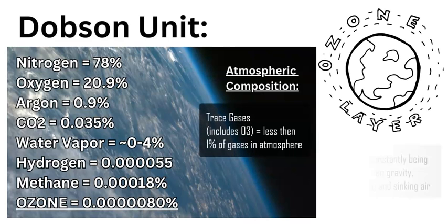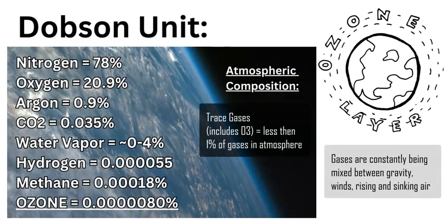Our atmosphere contains many gases. Most of them are going to be nitrogen, oxygen, and argon. There are also trace gases which equate to less than one percent of the atmospheric gas composition, which contains ozone. Ozone is 0.000080 percent, and water vapor can vary, but this is a very small constituent of the atmosphere — yet a very important one for its function.